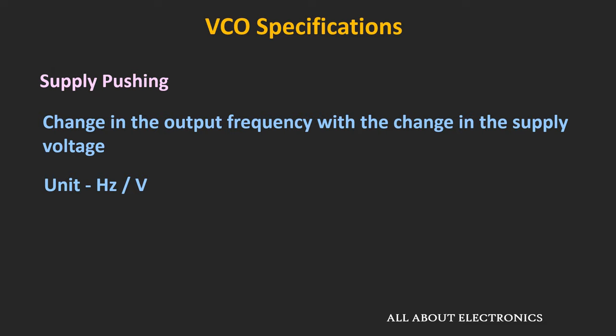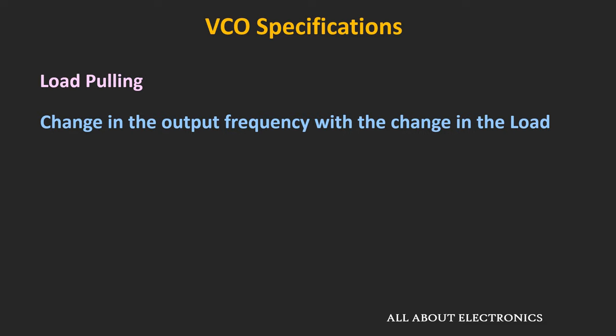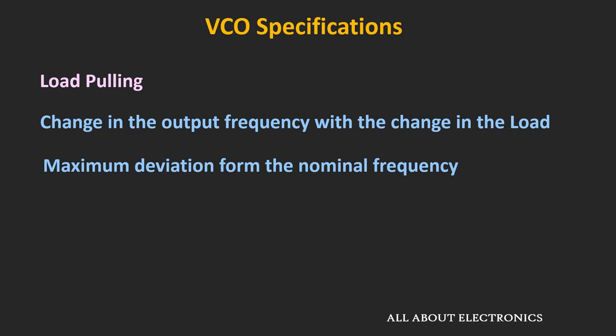Similarly, load pulling is the change in output frequency due to a change in the load. Ideally, for any VCO, a change in load should not affect the output frequency, but actually the output frequency does change with the change in load. That change in frequency with the load is known as load pulling. In the datasheet, it is usually defined as the maximum deviation in frequency from the nominal frequency.